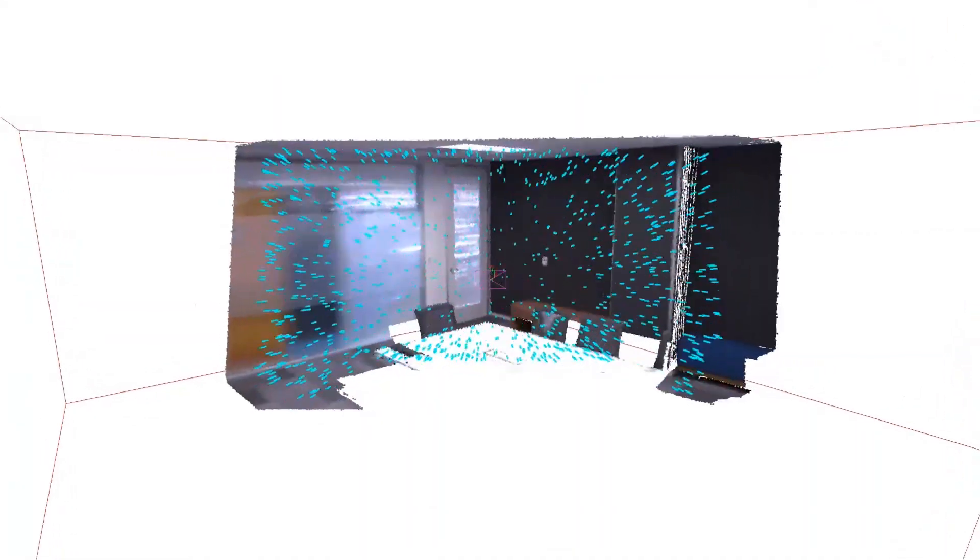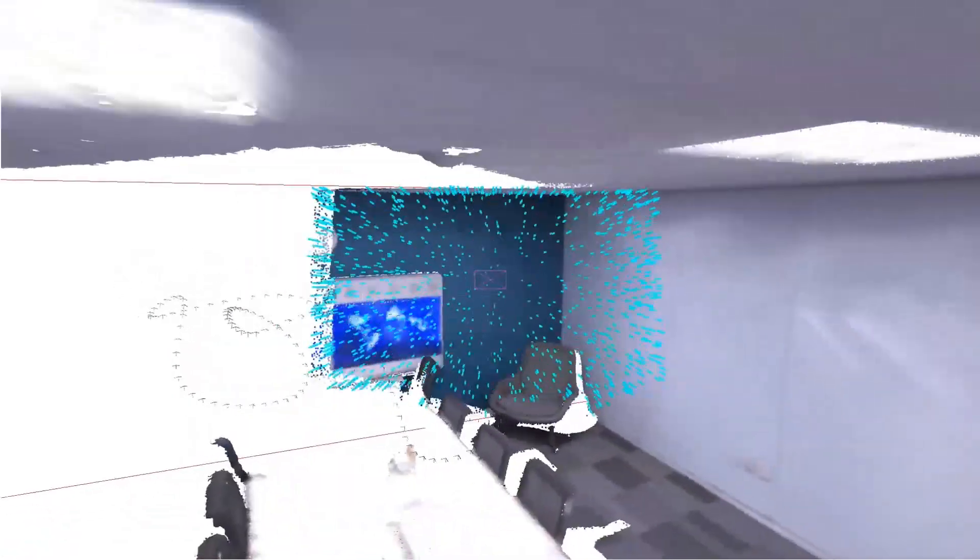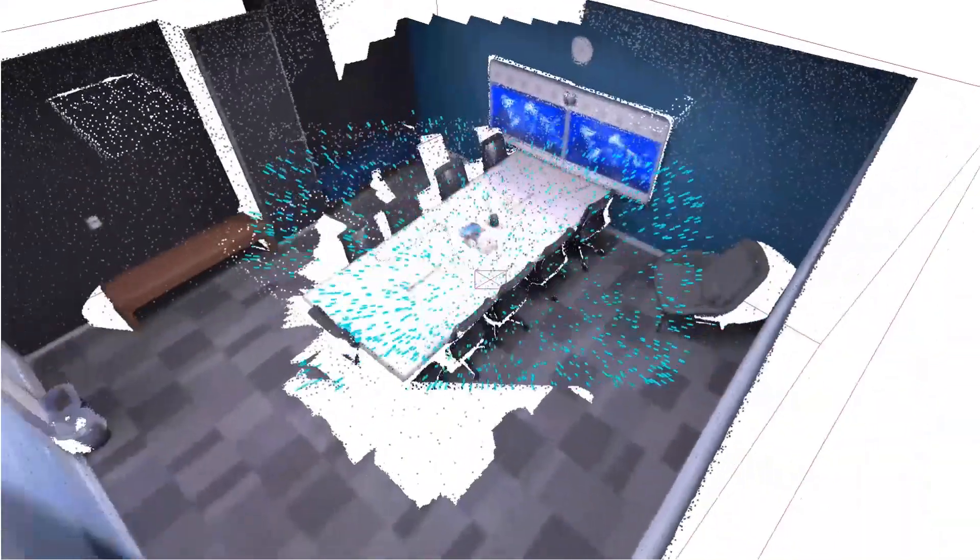This video shows the online reconstruction process of our system. We overlay the point cloud and the mesh to show where features are anchored. The blue points represent the sparse sampling process used for adding points and for tracking and mapping.